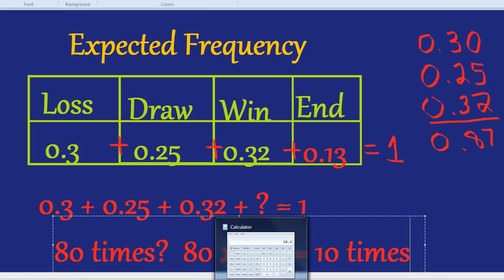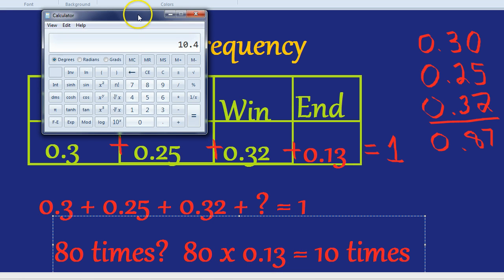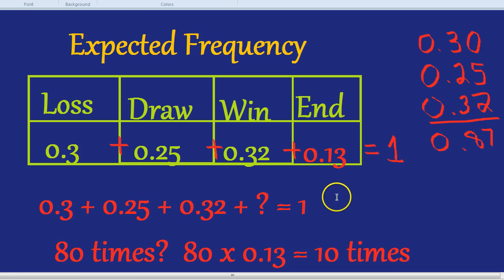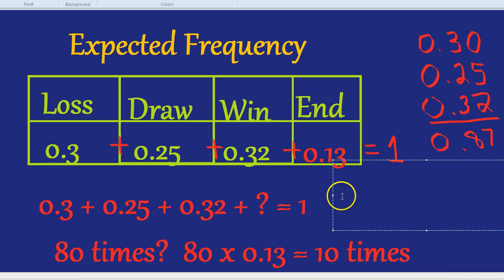What about if we weren't allowed a calculator and we had to work out how many times we would expect the game to end in a draw? Well, the probability of the game ending in a draw is 0.25. So we do, we play the game 80 times, multiplied by the probability.